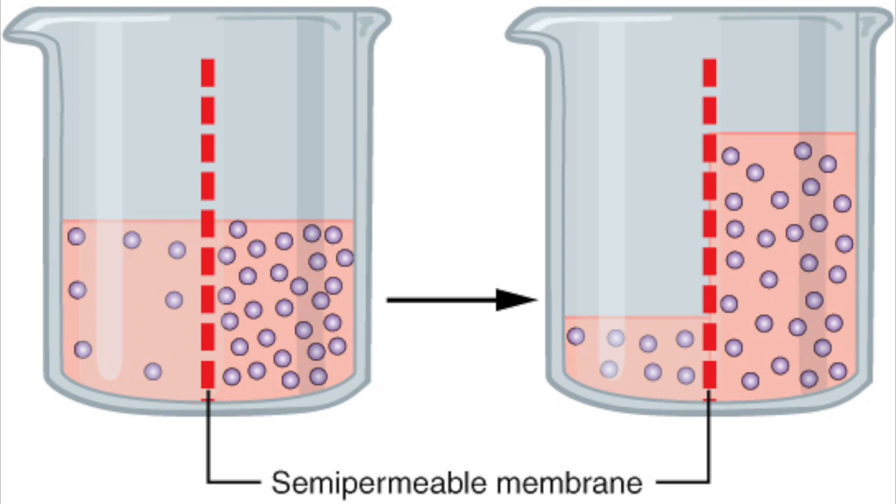Now the water molecules can pass through both ways in osmosis. And because there are more molecules on one side than the other, there is a steady flow of water, and this is because it's going from a high concentration to a low concentration.